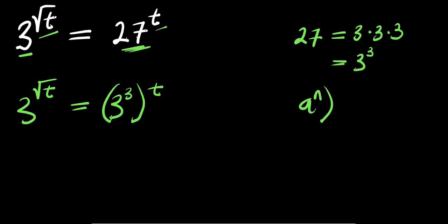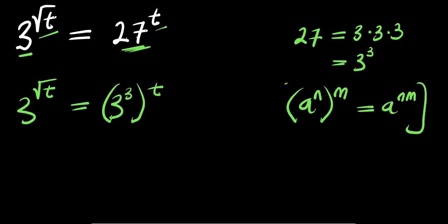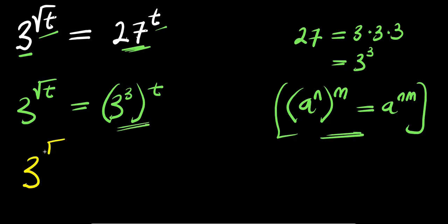Now, if you have a power m raised to the power of n, that equals a to the power of n times m — we apply this identity right here. So what we are going to have is 3 power root t equals 3 power 3 times t, that is 3t.